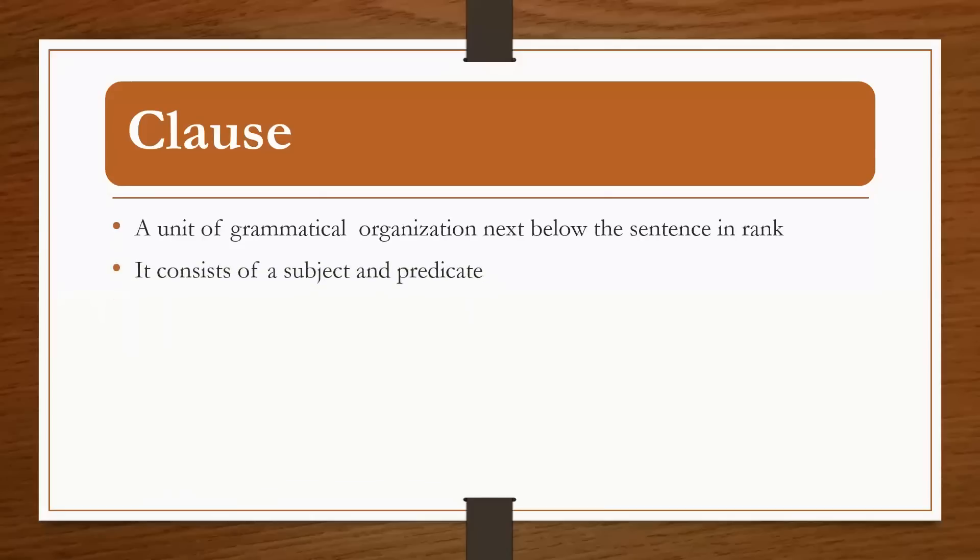The clause consists of subject and predicate. The subject is the doer of an action. Take the example: the dog barks when the postman arrives. If you look at the subject, the dog, and the verb, barks.